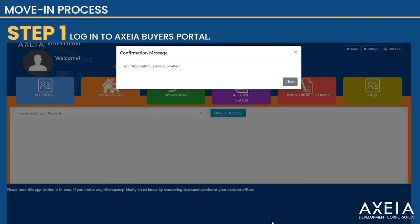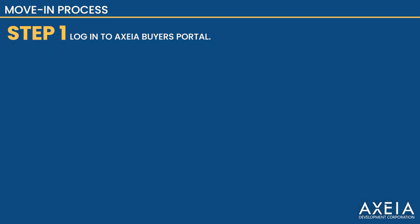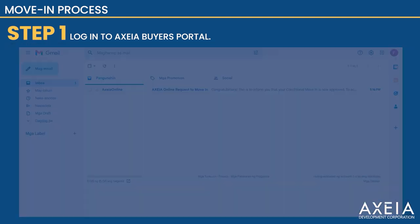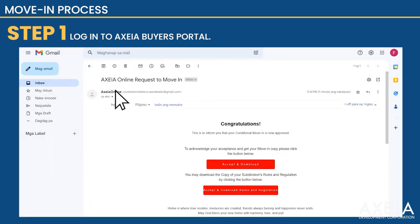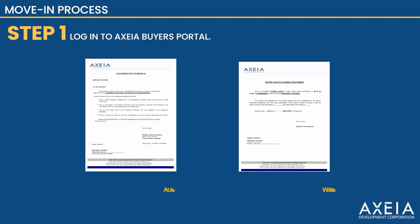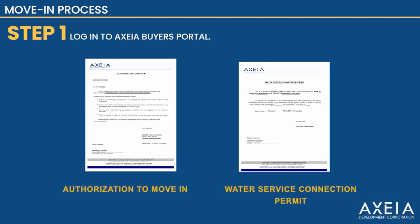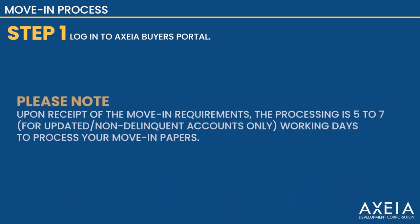Click Apply. A confirmation message will appear. After the approval of your request, you will receive an email. Click Accept and Download to acknowledge your acceptance and get a copy of your move-in. Please note, upon receipt of the move-in requirements, the processing takes 5 to 7 working days to process your move-in papers.